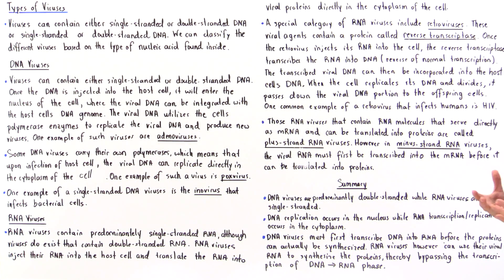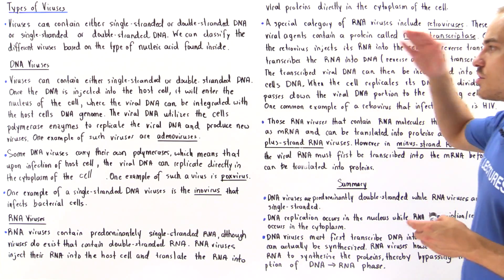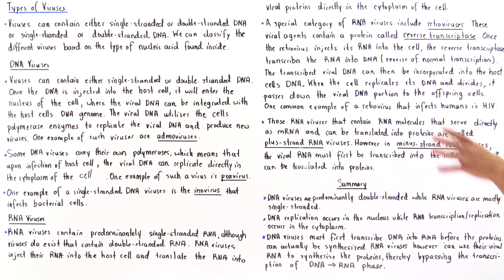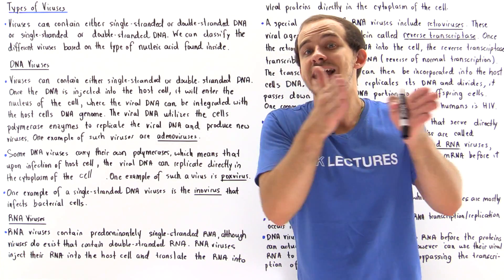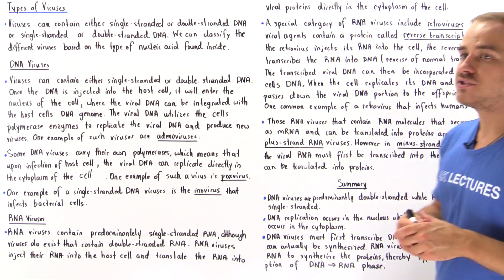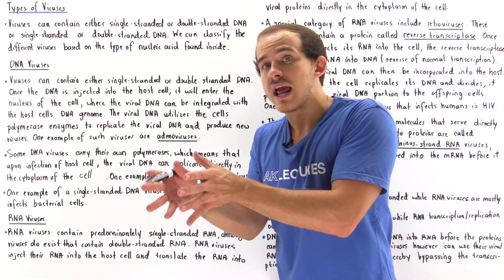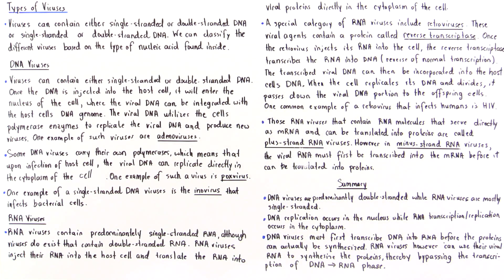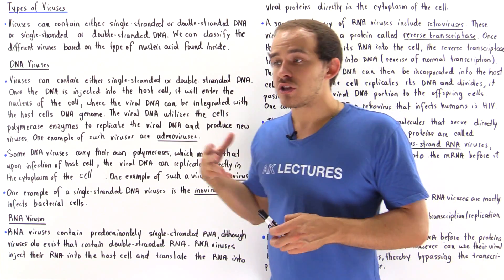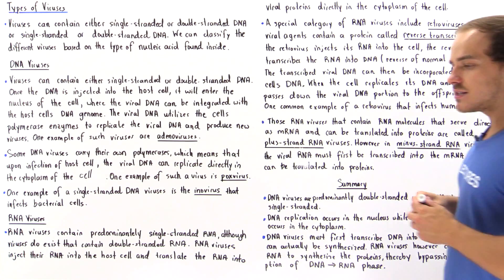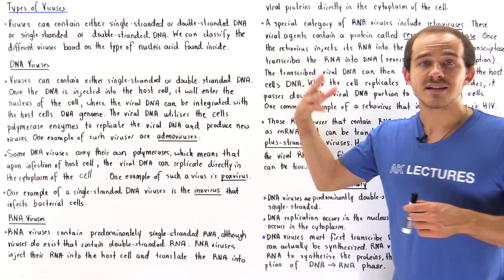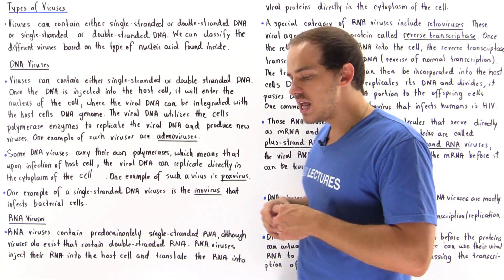RNA viruses can use their RNA to directly translate and synthesize proteins. Within RNA viruses, we have plus strand RNA viruses, where the RNA is used directly as mRNA to synthesize proteins, and minus strand RNA viruses, where the RNA must first be transcribed into mRNA. A special type of RNA virus — the retrovirus — contains reverse transcriptase enzymes that transcribe RNA into DNA, which can then be incorporated into the genome of the host cell and passed down to offspring cells during replication and division.